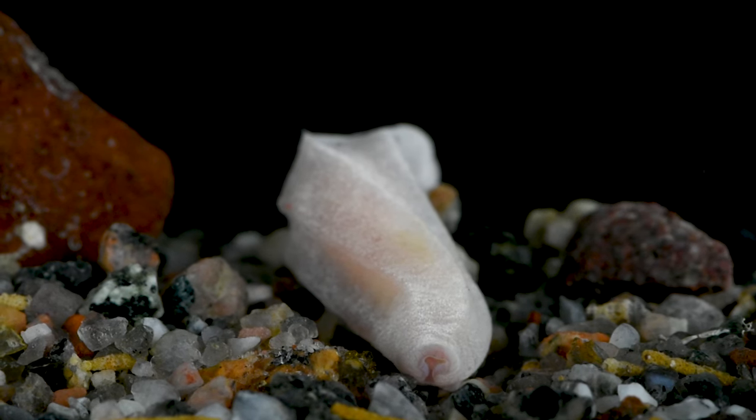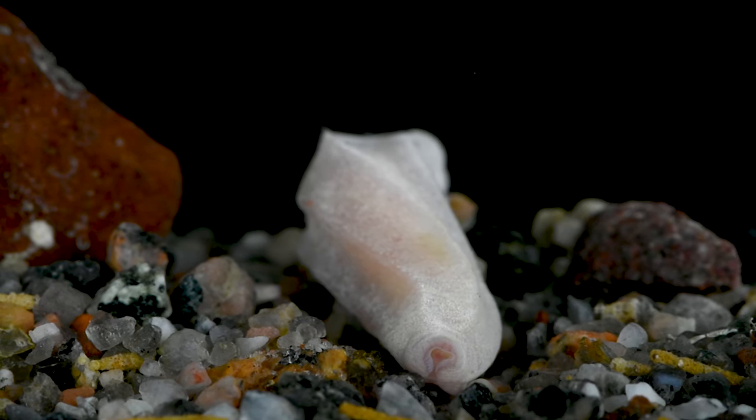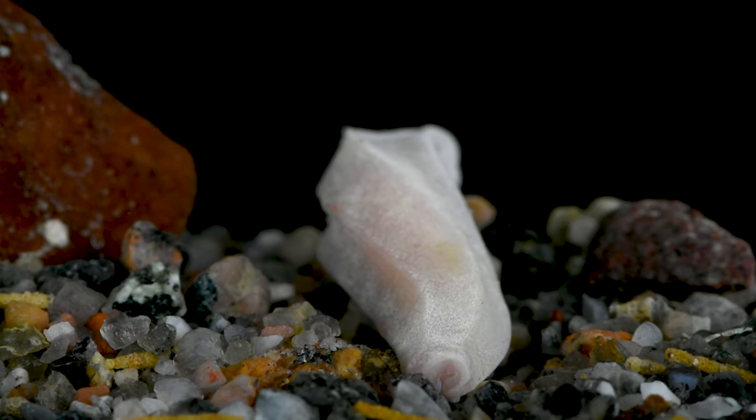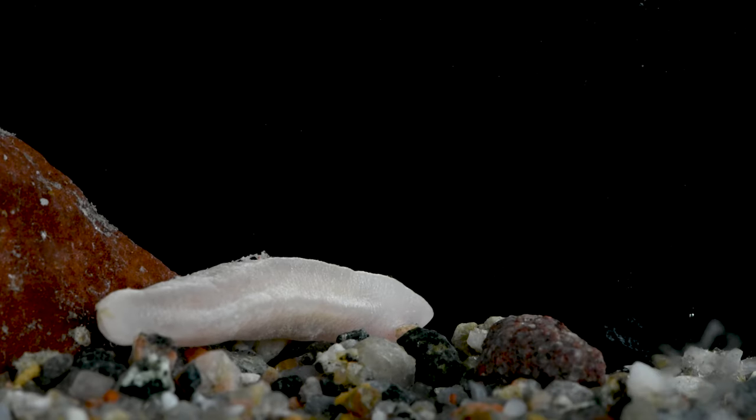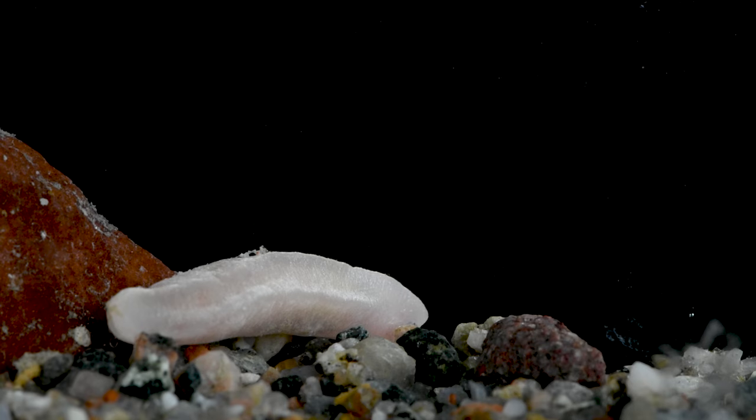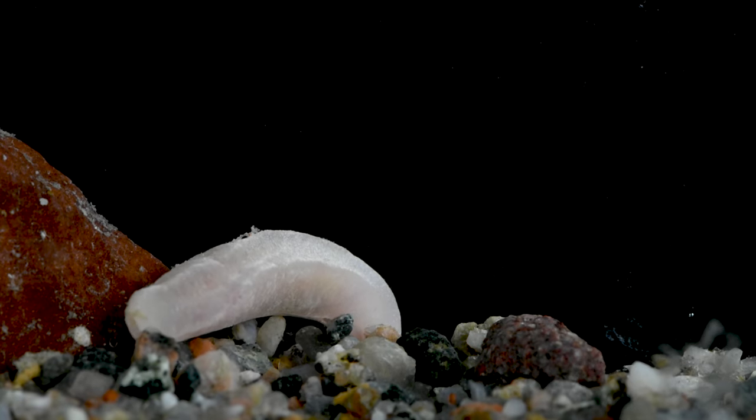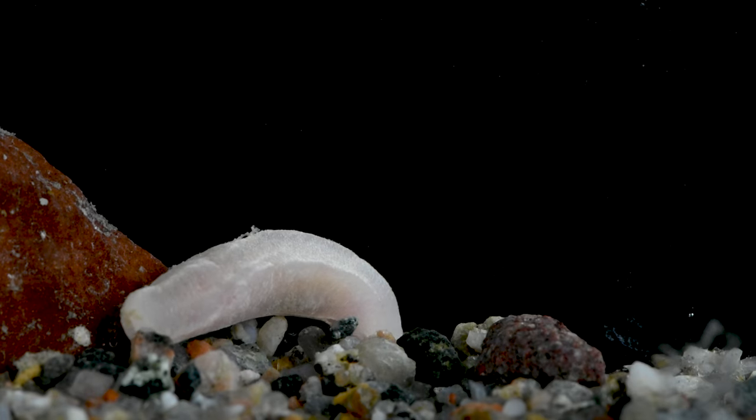The front of the solenogaster has a large opening called an atrium. This atrium is lined with sensitive papillae that it uses to taste the water. You may be wondering, what is the solenogaster looking for? Well, these animals may not appear intimidating to you or me, but they are actually specialized predators.